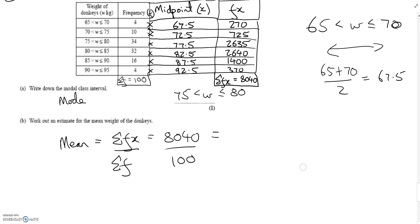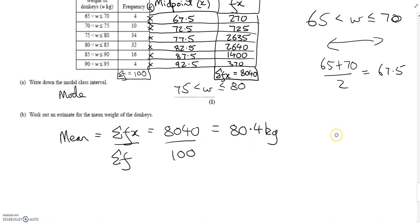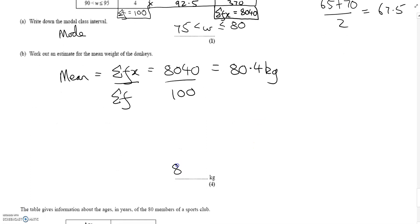8040 is the total estimated weight of all the donkeys added together, and 100 is the total number of donkeys as stated in the question. Typing that into our calculators gives 80.4 kilograms. So the estimated mean weight of the donkeys is 80.4 kg — it can be a decimal, that's fine.